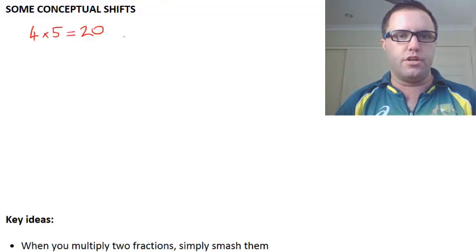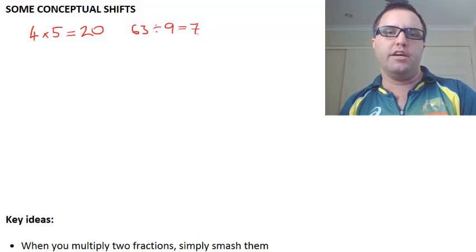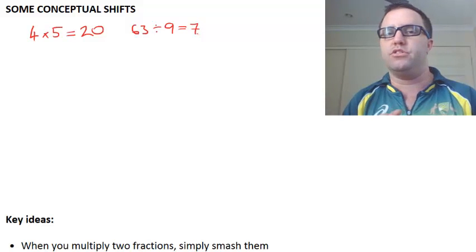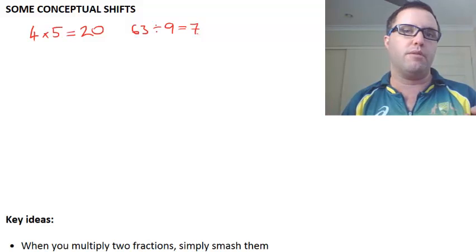And also, if we had 63 divided by 9, that's going to get you 7. So when you divided, you typically got a number smaller than the two numbers that you started off with. Which makes sense when you are multiplying by whole numbers.